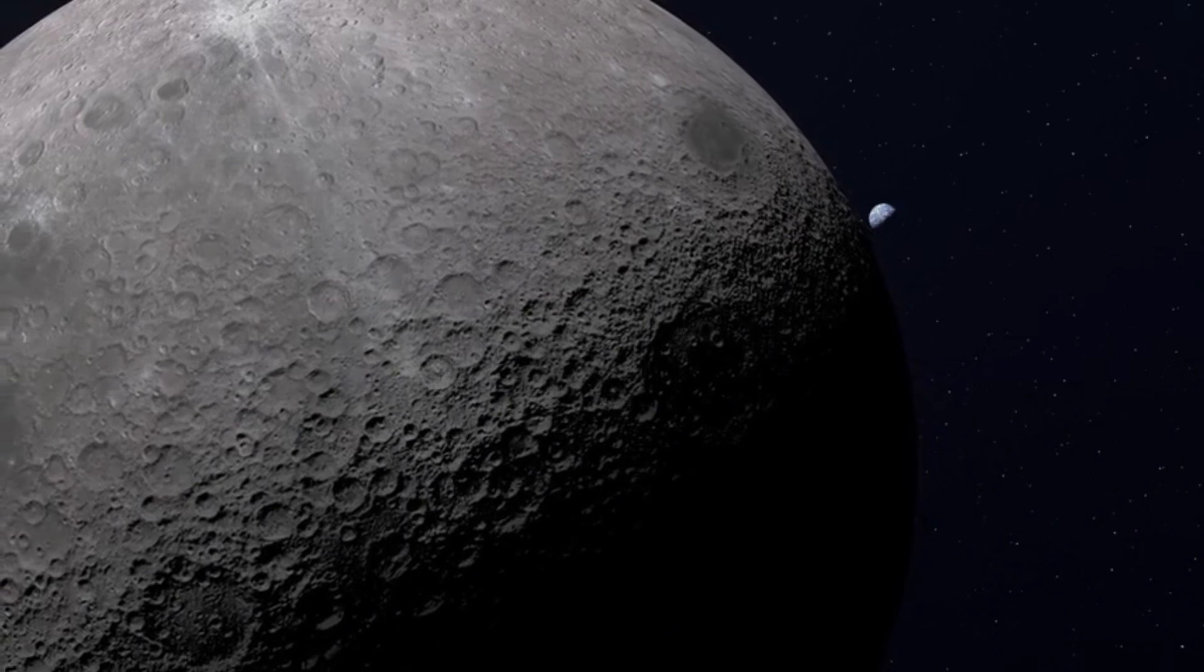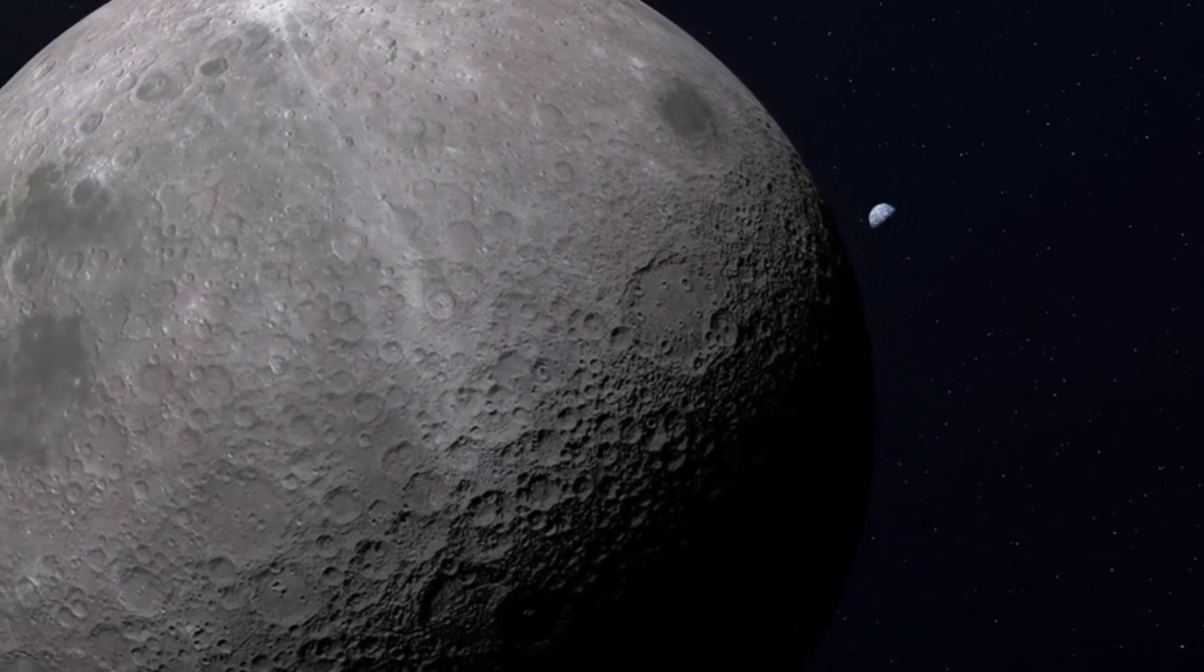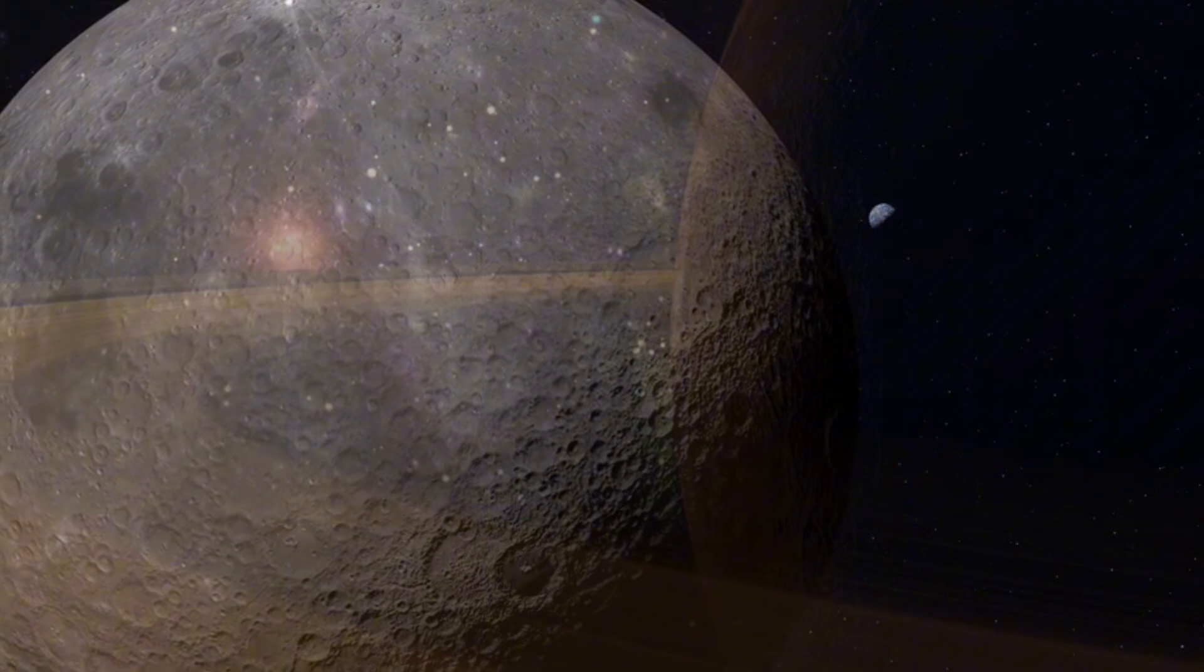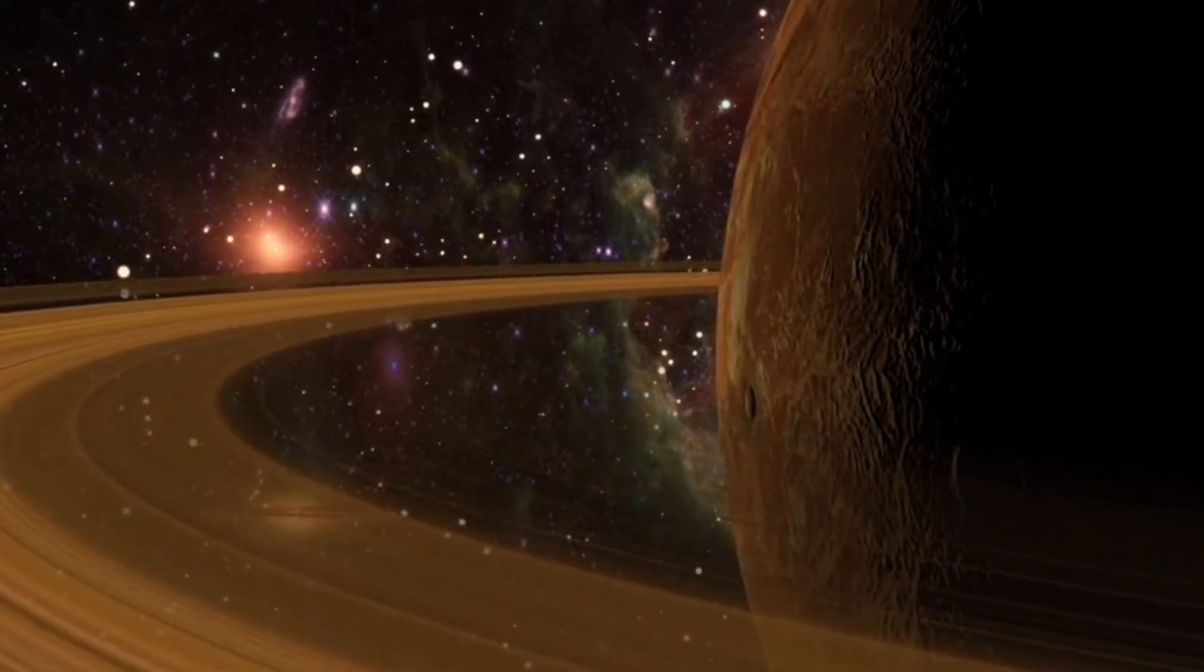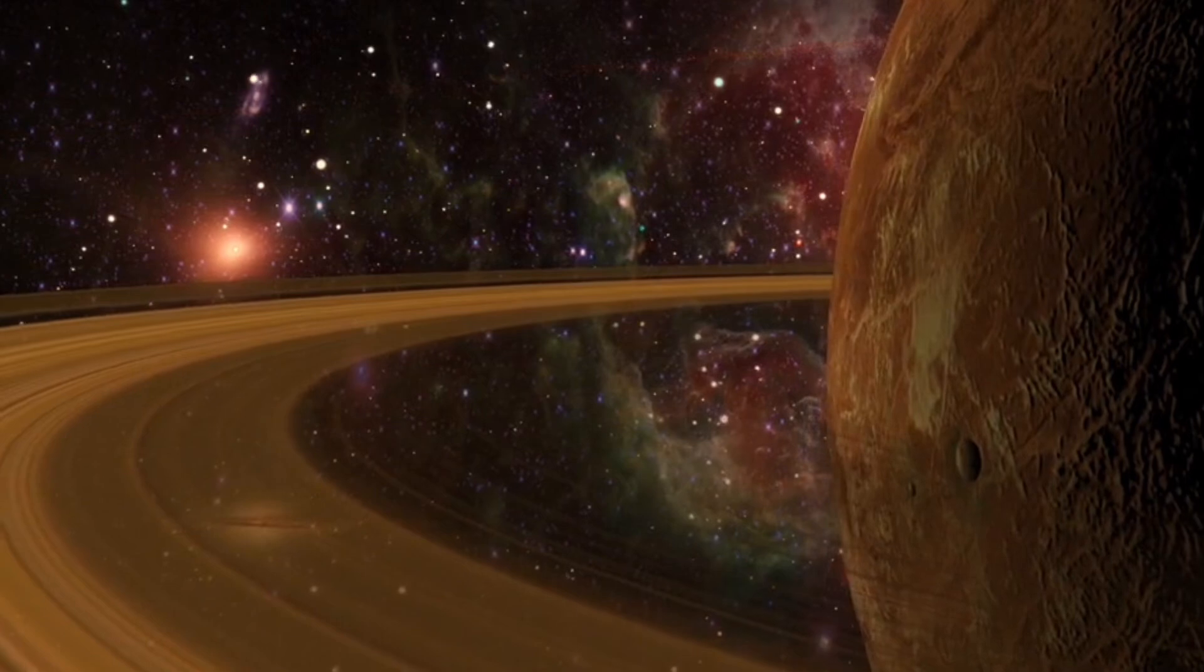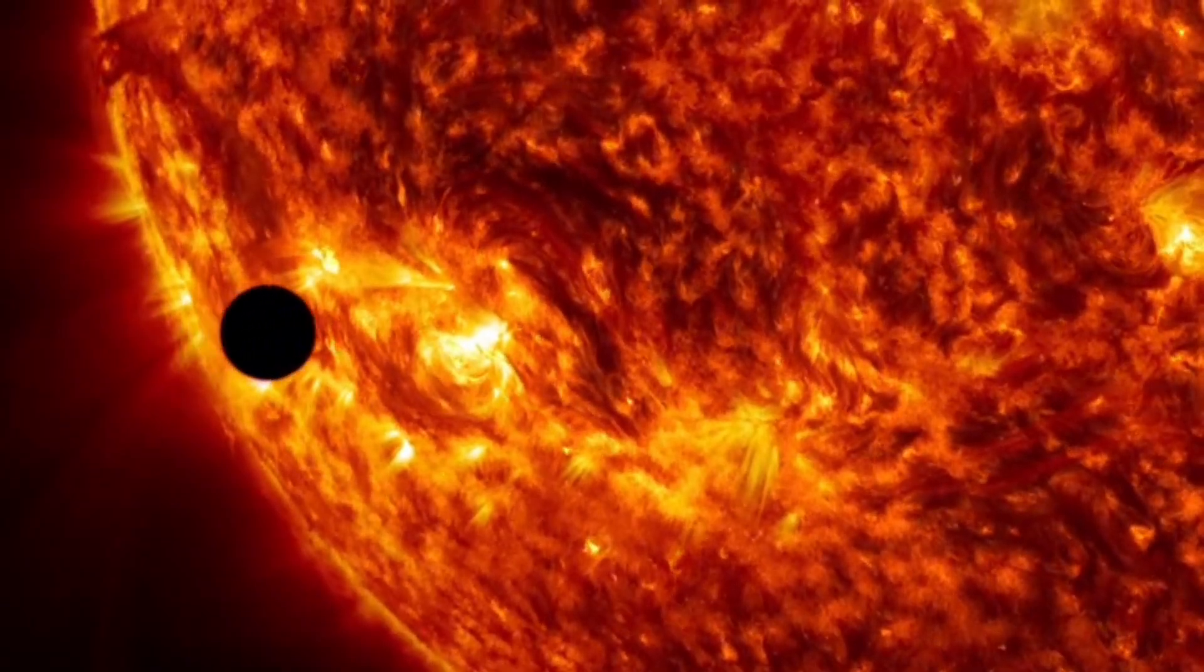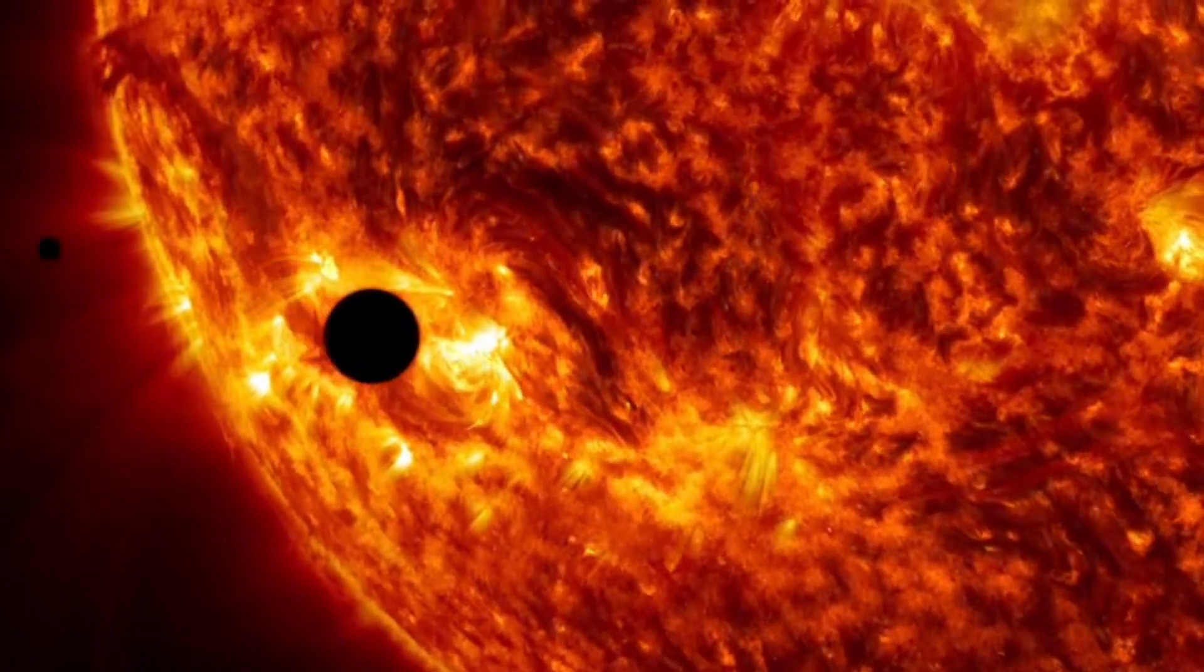One tiny rogue planet, OGLE-2016-BLG-1928, is about the size of Earth's moon. It was discovered using a technique called gravitational microlensing, when a planet's gravity bends the light of a background star. Rogue planets challenge our ideas of what a planet is and where life might exist. Even in the cold emptiness of space, these wanderers might hold secrets.